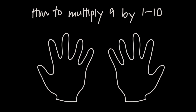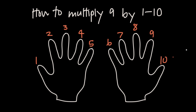Hold out your hands palms up in front of you and number your fingers 1 through 10 from left to right — 1 through 5 on the first hand and 6 through 10 on the second hand, always left to right. Then multiplying 9 by any of these numbers 1 through 10 just involves bending down the finger you're trying to multiply by.